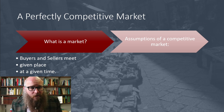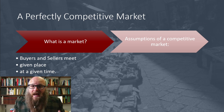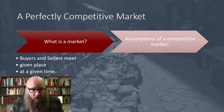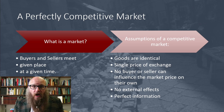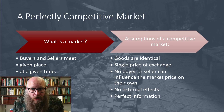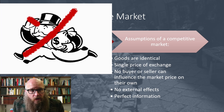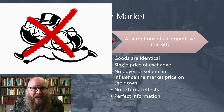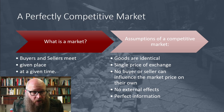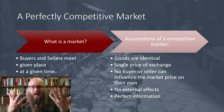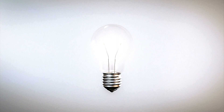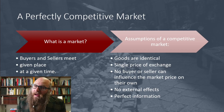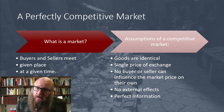To have a perfectly competitive market, we need a number of components. The goods have to be identical. There is just one price for everybody in the market. No buyer or seller is large enough that they can influence the price — everyone just takes the price the market gives them. There are no external effects, so there's no pollution, there's no positive spillovers. And finally, there's perfect information.